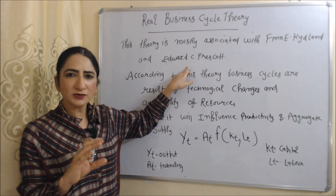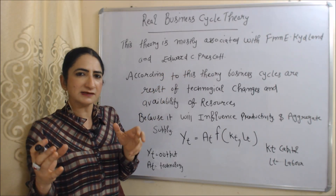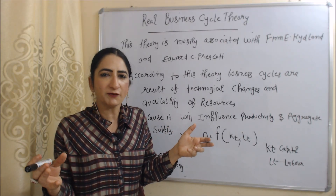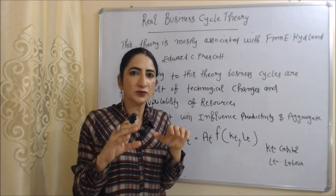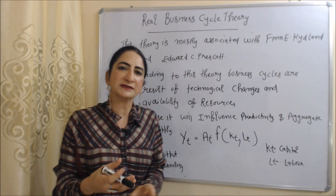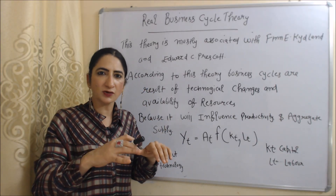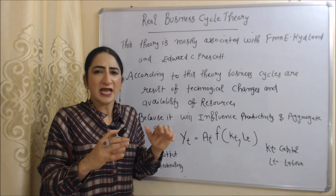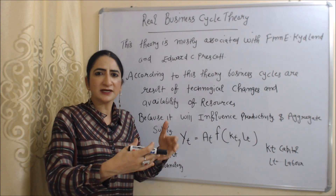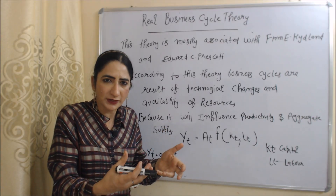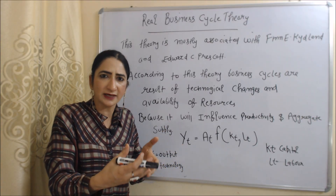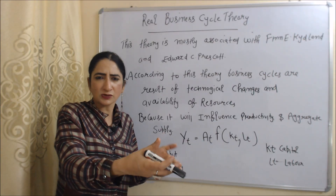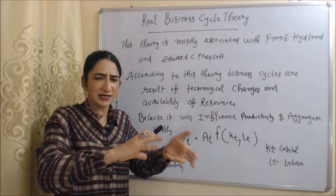According to this theory, business cycles are a result of technological changes and availability of resources. As we know, our technology and resources influence our production and aggregate supply, which ultimately creates fluctuations in the economy.